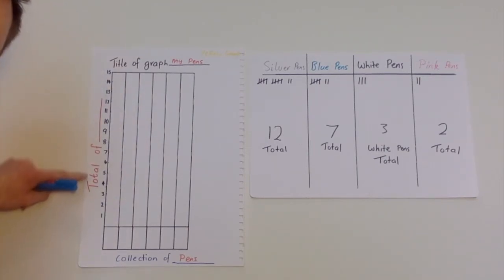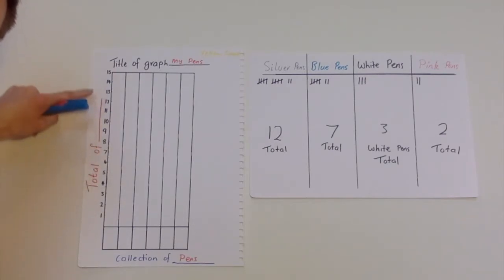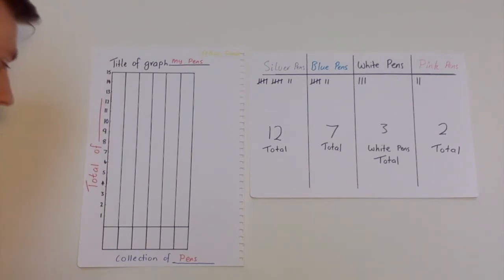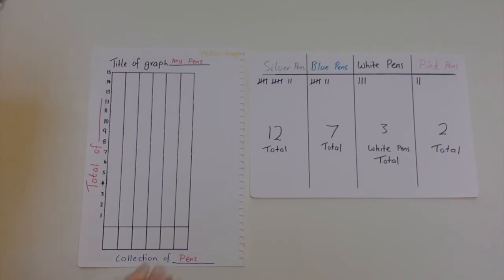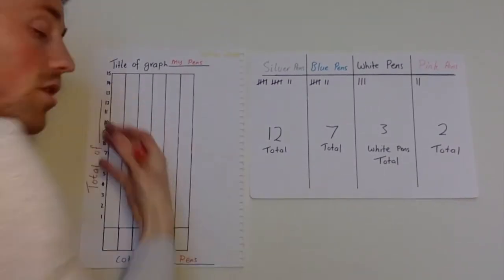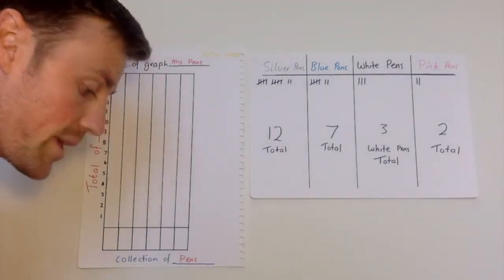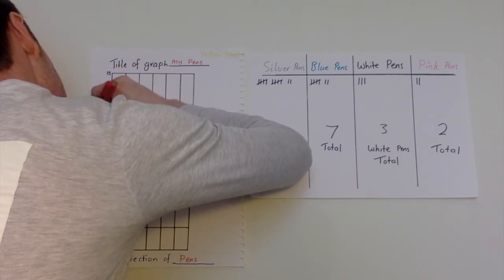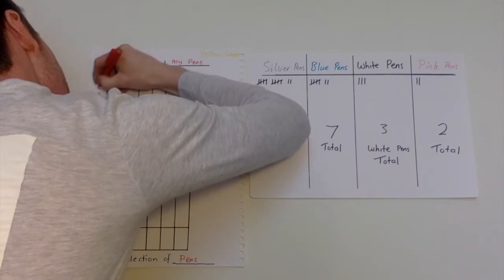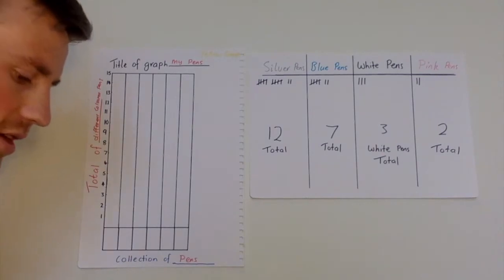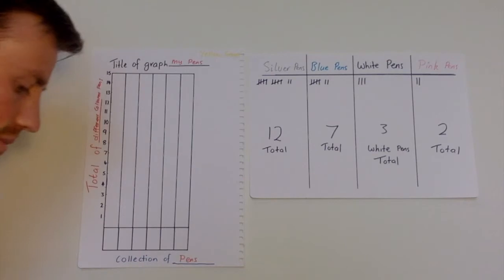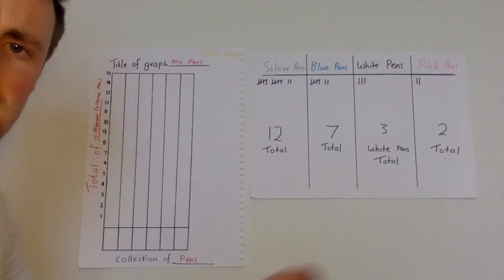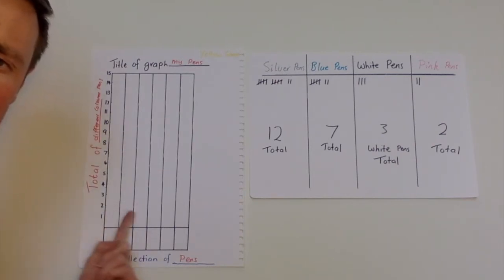Then have a look at the side, where all the numbers are. Remember, those numbers are the total number of each category. On the side I need to put 'Total of pens' — total of different colored pens, because that's my category. It's a bit tricky to write sideways, so you'll need to turn your page around.